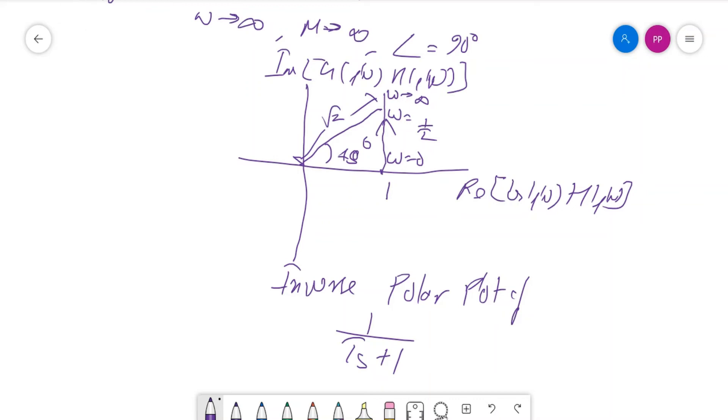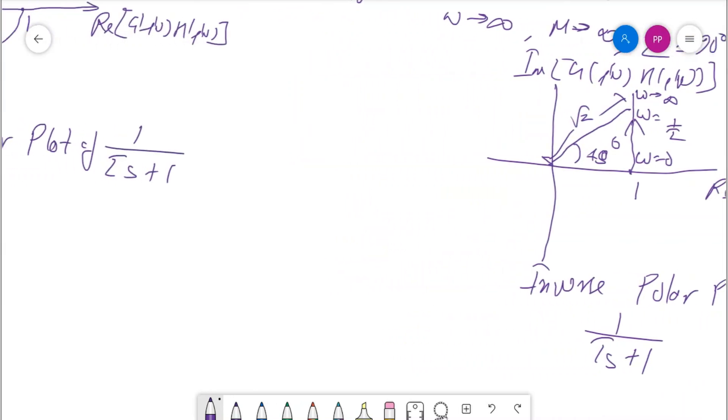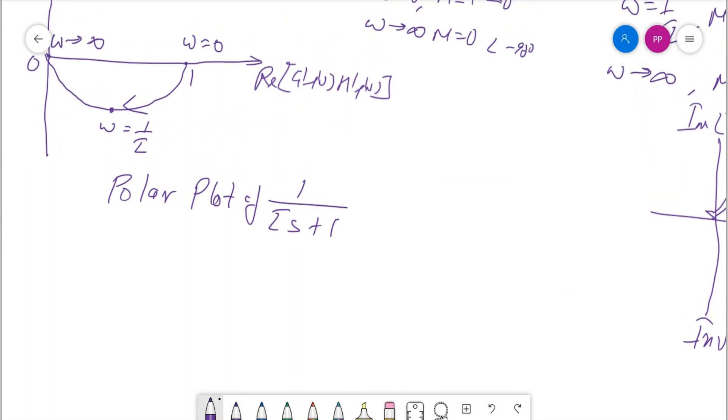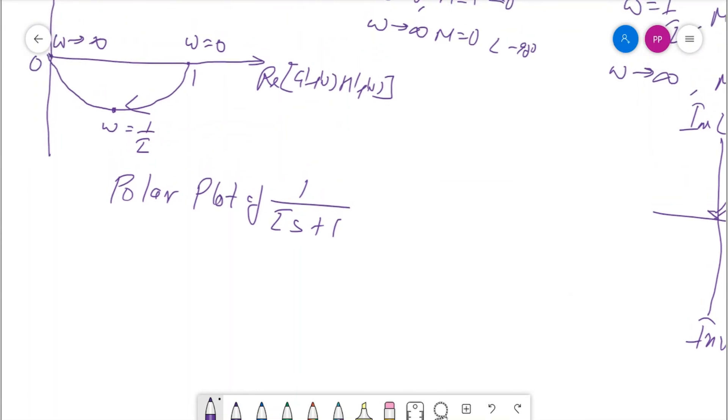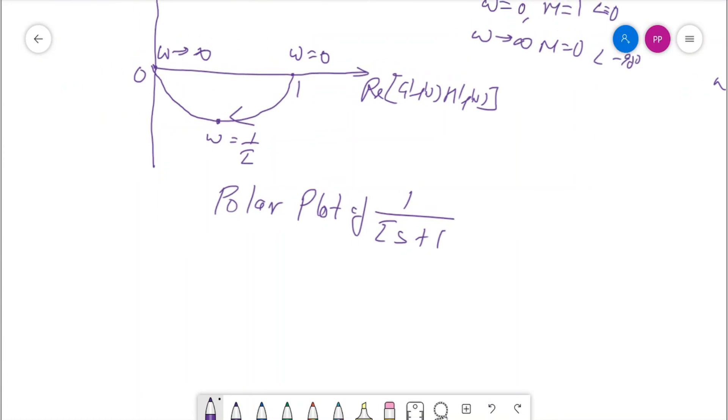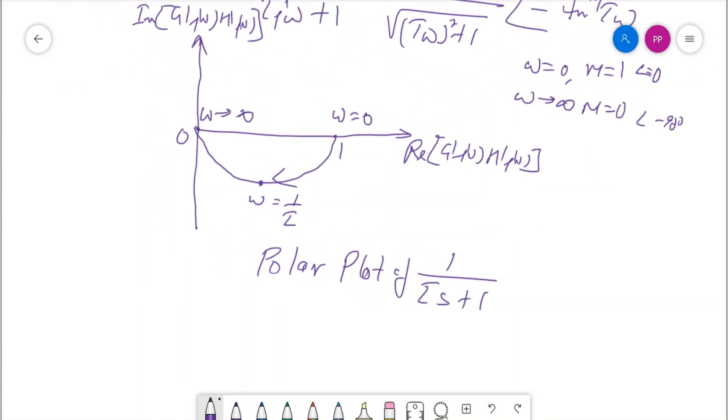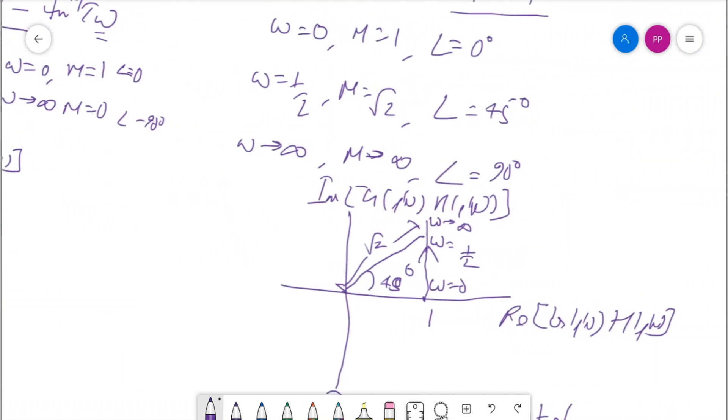Basically this is the polar plot of τs+1 which is equal to τjω+1. You can compare that both polar plots are very much different from each other. Let us compare the polar plots. You see the polar plot of 1/(τs+1) like this, and the polar plot of inverse of 1/(τs+1) is this one.